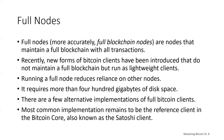Full blockchain nodes maintain a complete and up-to-date copy of the Bitcoin blockchain of all transactions, which they independently build and verify, starting with the very first block — the Genesis block — and building up to the latest known block in the network. A full blockchain node can independently and authoritatively verify any transaction without recourse or reliance on any other node or source of information. The most common full blockchain node implementation is Bitcoin Core, also sometimes referred to as the Satoshi client. Running a full node requires more than 400 gigabytes of disk space.